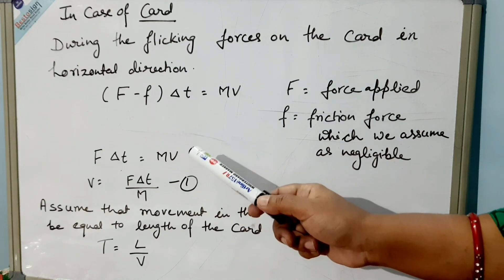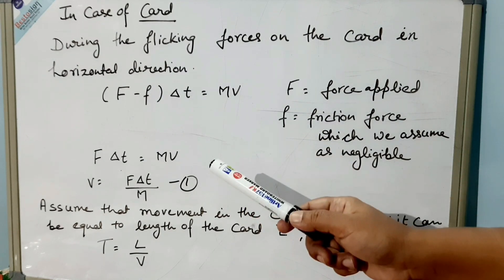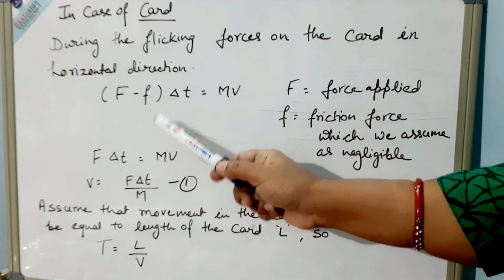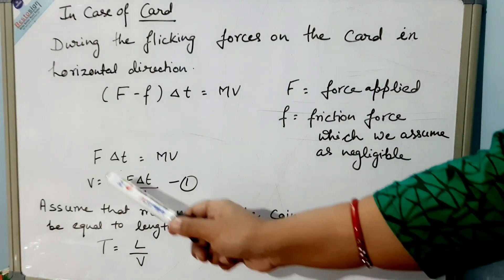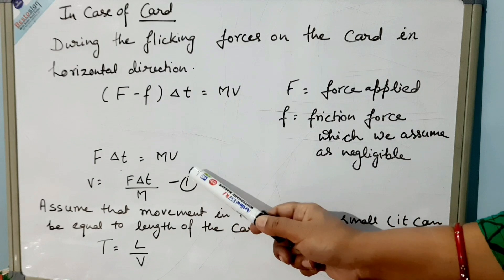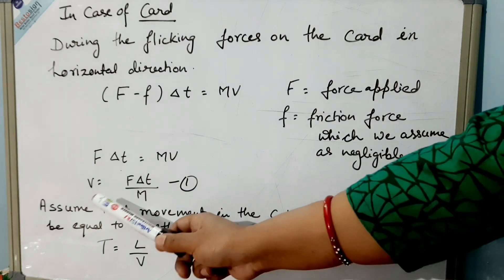Δt is the time for flicking. So when we assume this as negligible, the equation will be FΔt = MV, and velocity will be equal to FΔt/M.